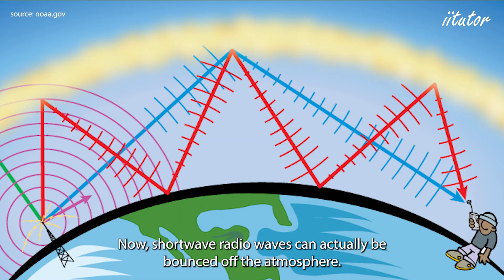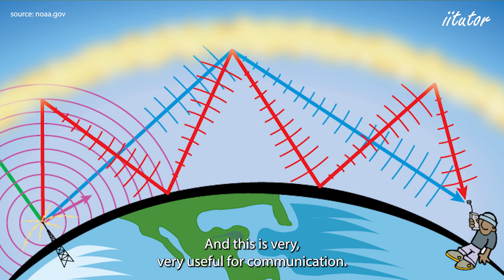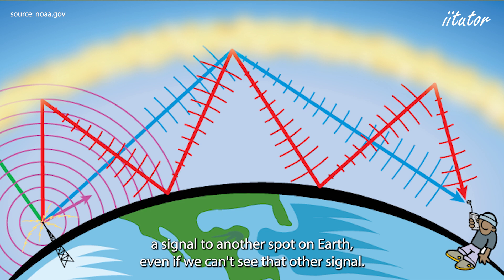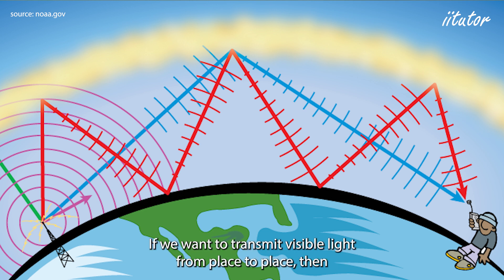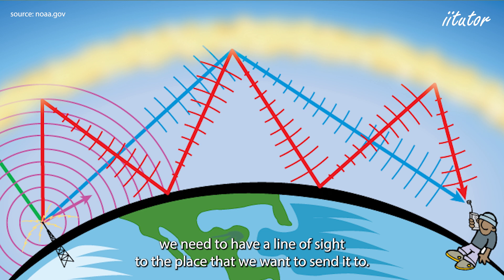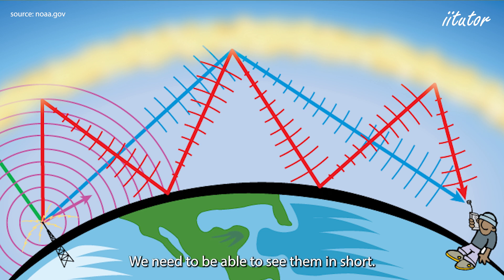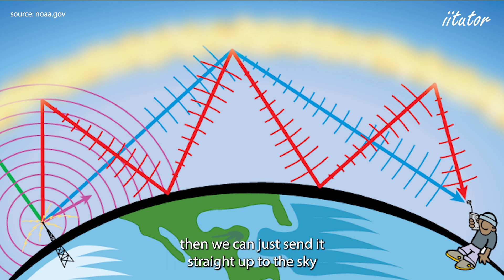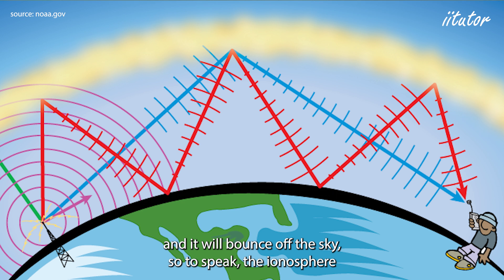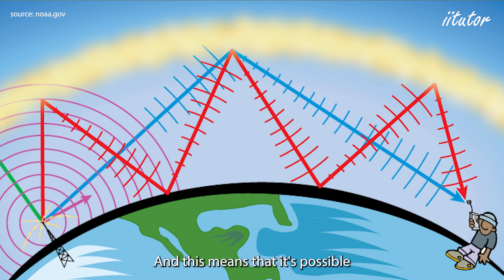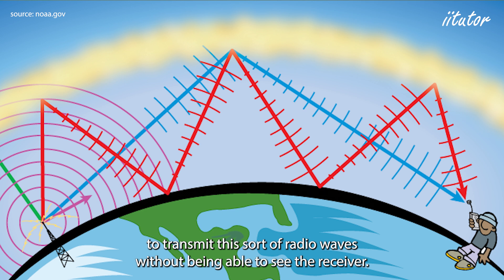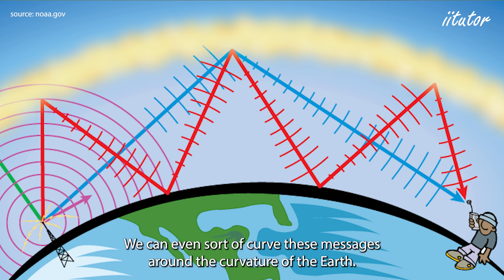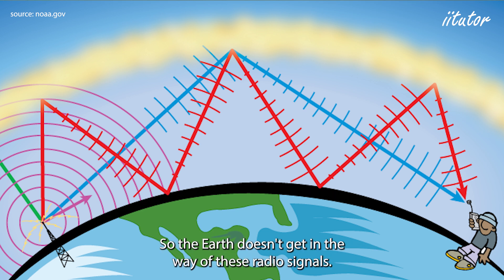Shortwave radio waves can actually be bounced off the atmosphere, which is very useful for communication. We can send a signal to another spot on Earth even if we can't see it. If we send an AM radio signal we can send it straight up to the sky and it will bounce off the ionosphere and back down to the ground. This means we can transmit this sort of radio wave without being able to see the receiver, and we can even curve these messages around the curvature of the Earth so it doesn't get in the way.